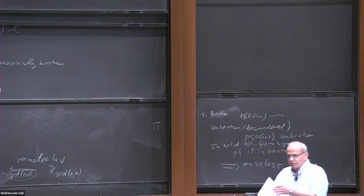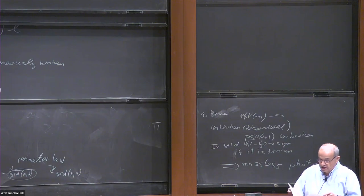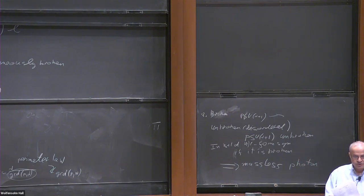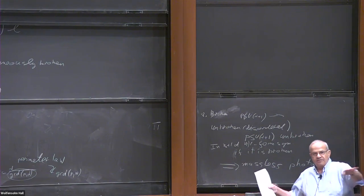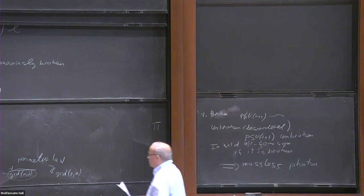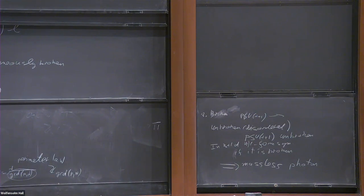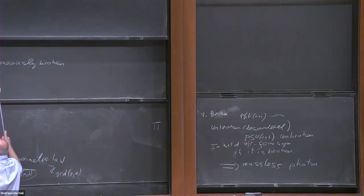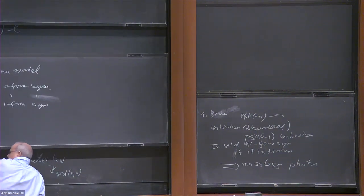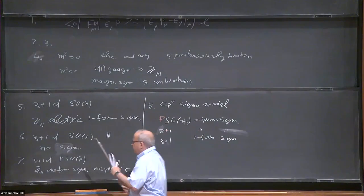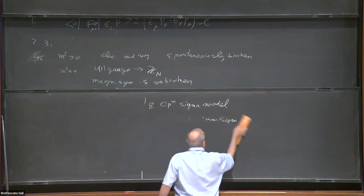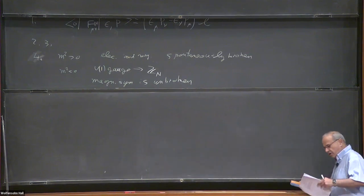For those who know what SPT phases are: there are SPT phases of higher-form symmetries, and correspondingly there are edge modes. If there are domain walls, there are modes on the domain walls, some of which have been predicted before. Since I've worked on symmetries for many years, I would like to summarize my understanding in a table about global versus local symmetries.